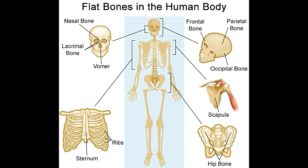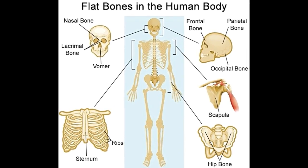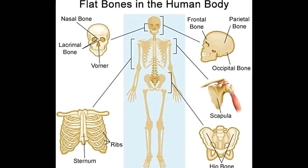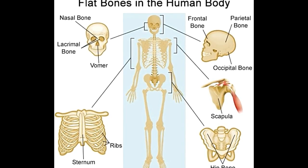There are 14 facial bones, which include the maxilla, zygoma, lacrimal, nasal, inferior nasal concha, palatine, vomer, and mandible. Out of these, the nasal bone (two oblong-shaped bones that form the bridge of the nose), the lacrimal bone (smallest bone of the skull, in the anterior part of the medial wall of the orbit), and the vomer (quadrilateral-shaped bone that forms the lower and hind part of the nasal septum) come under the category of flat bones.